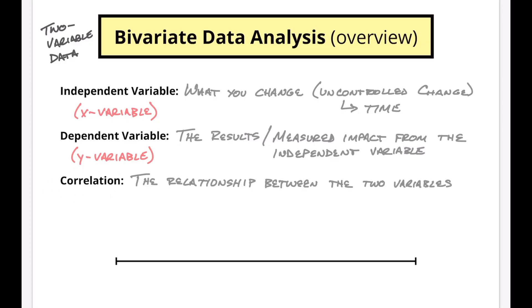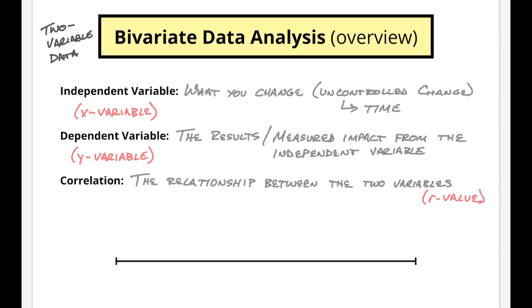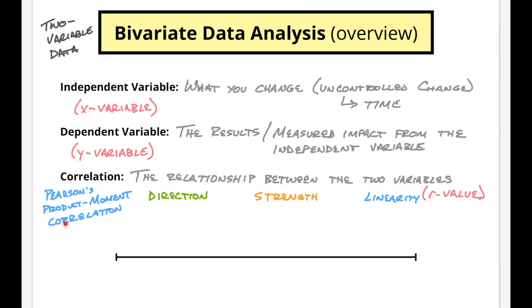Then we have what's called correlation — the relationship between the two variables, the independent and dependent. This is always noted as your r-value. Correlation is generally measured in three ways: direction, strength, and linearity. The correlation we use in this course is the r-value from Pearson's product moment correlation. There are a few different ways to calculate correlation, but this is the one used in IB courses. The key thing to know is that Pearson's product moment correlation only applies to linear data — I cannot stress this enough.